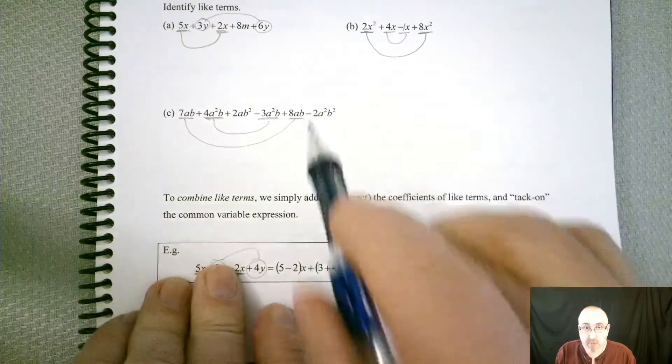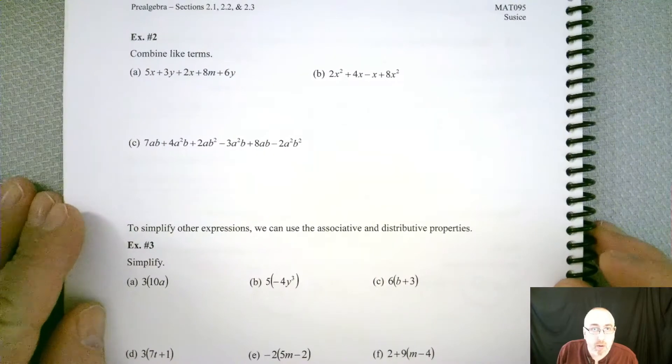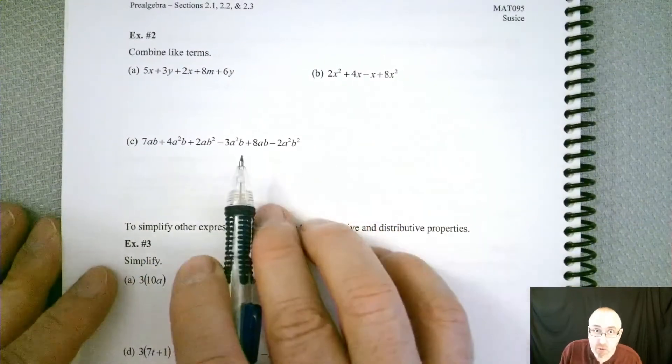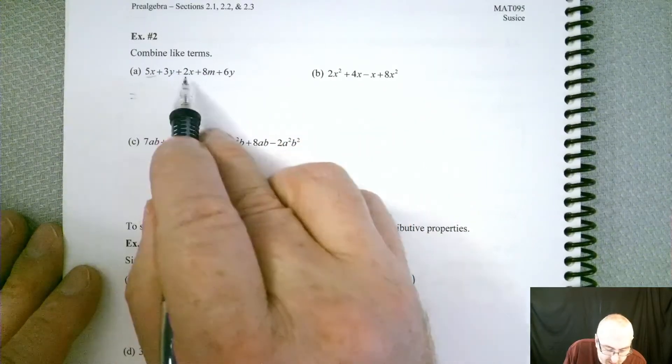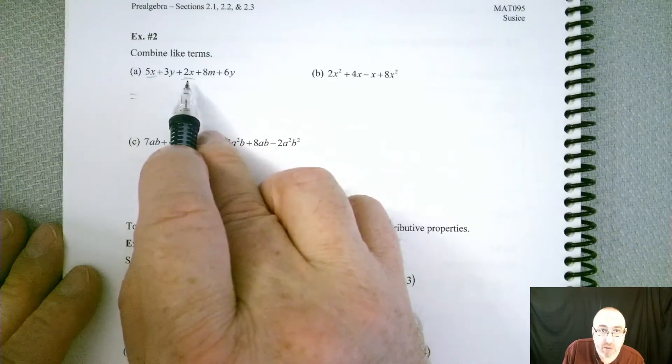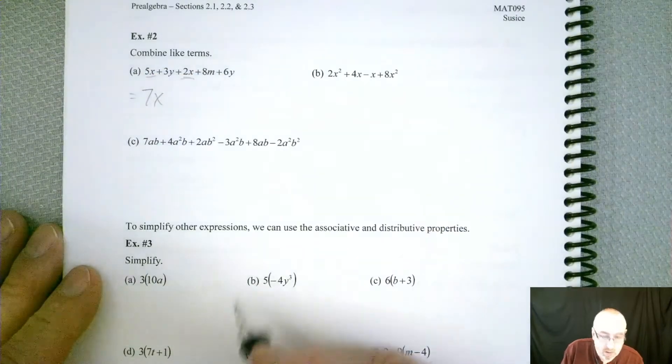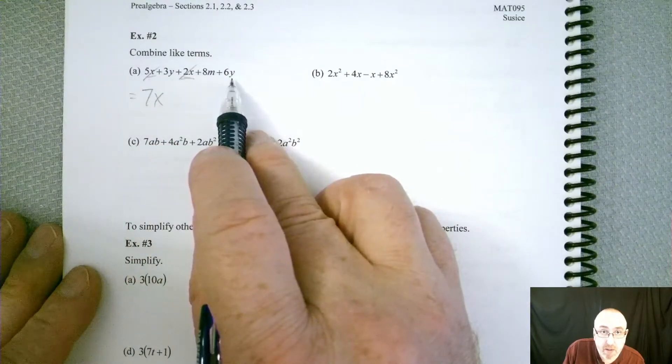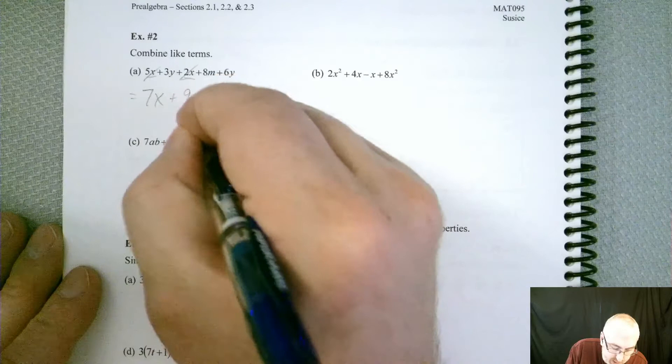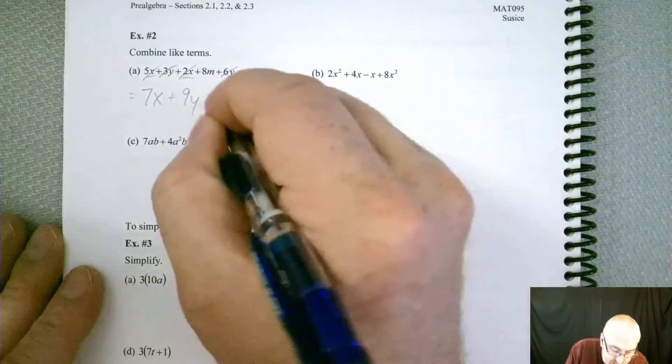All right, so now let's try these same problems again on the next page. So, same problems, and we already know which ones go together. So let's see if we can just combine them nice and quick. So again, we have the 5x and the 2x. So if you've got 5 apples and 2 of the same type of apple, you better have a total of 7 apples. So that takes care of those. 3y and the 6y, well, that better give you a 9y. So those are gone. And the only thing left is that 8m, so we're just going to tack it on.